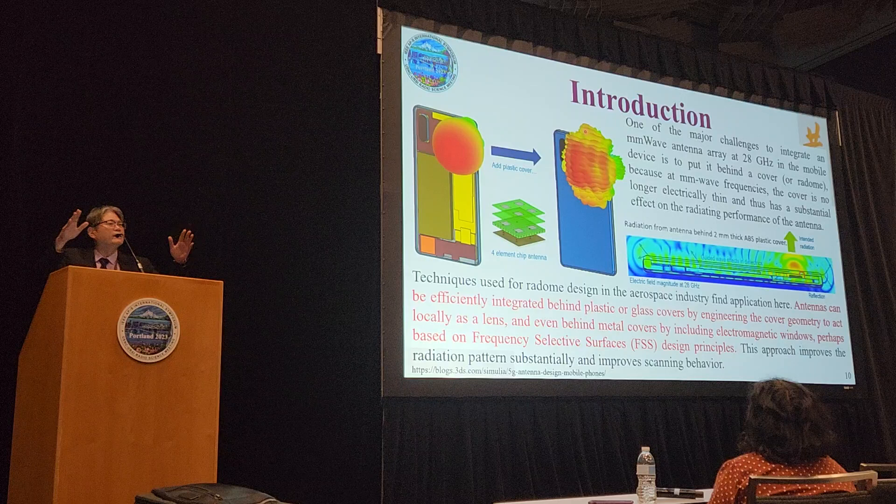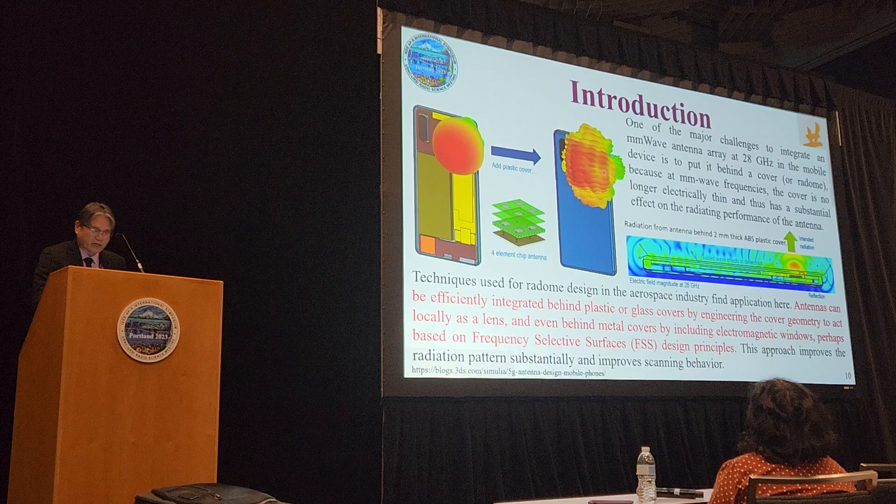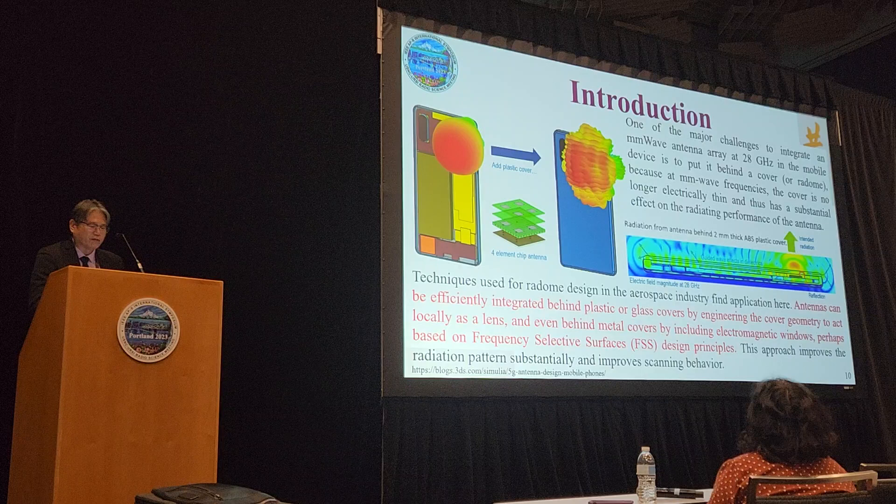Obviously, this blog says that the antennas can be efficiently integrated behind a plastic or glass cover by engineering the cover geometry to act as a lens, or even behind a metal cover by using some kind of electromagnetic windows. Today, I'm going to talk about these windows.